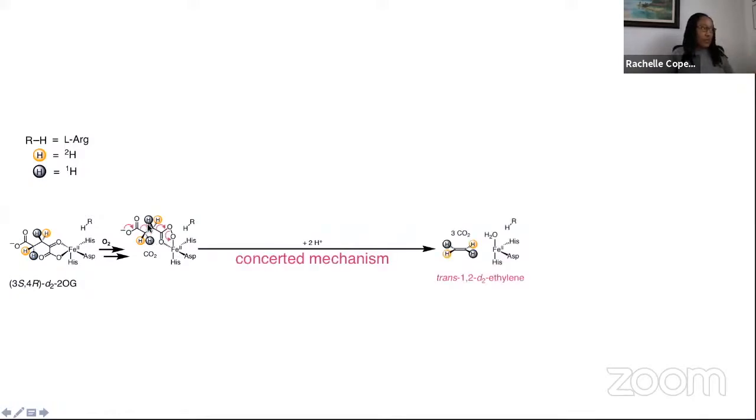We have 2-OG, it forms an intermediate, which we initially speculated could be this iron-2-peroxysuccinate. If it's a concerted process, the deuterium on one methylene unit is going to be on the same side of the molecule as the protium on the other. Being concerted, retaining stereochemistry would allow us to form trans-D2 ethylene starting from 3S4R 2-OG.